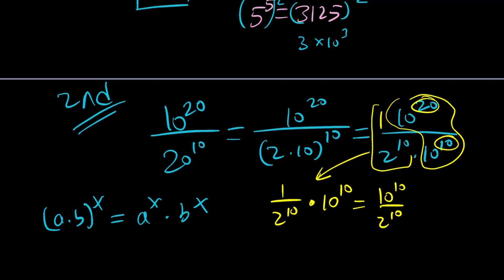And now this kind of turns into 10 to the 10 divided by 2 to the 10. And as you know, when the exponents are the same, we can divide the bases. That gives us 5 to the 10th power again, right? Okay, great. So this is the second method.